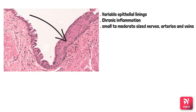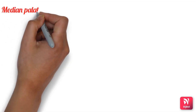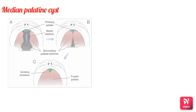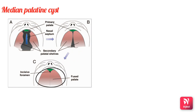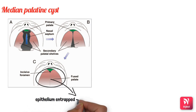Next, moving on to the median palatine cyst. This picture shows secondary palate formation from the palatal shelves moving toward each other to fuse in the midline. Whenever these palatal shelves fuse in the midline, a few epithelial cells become entrapped along the embryonic line of fusion. These entrapped epithelial cells become remnants, and whenever these remnants are stimulated, they give rise to the median palatine cyst.